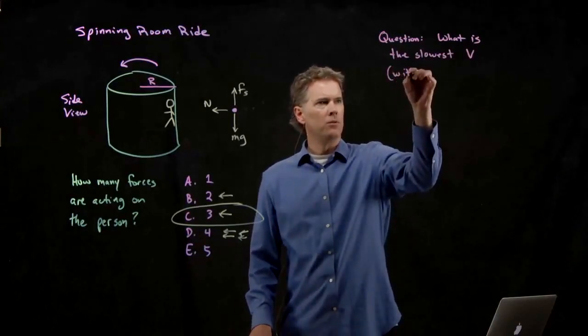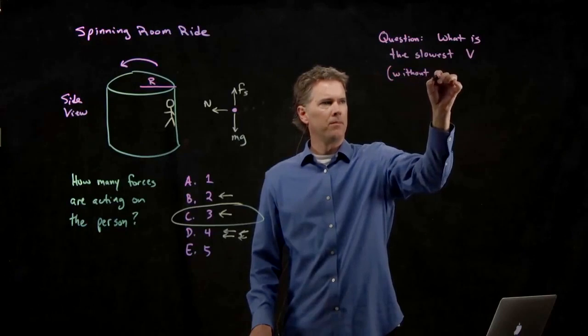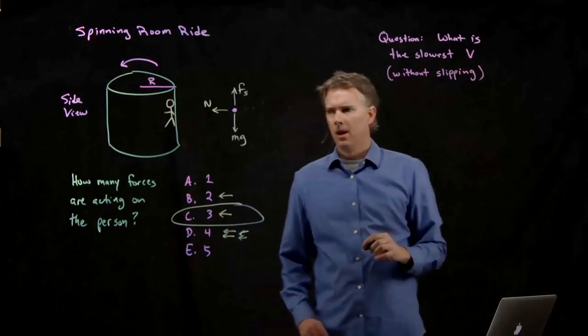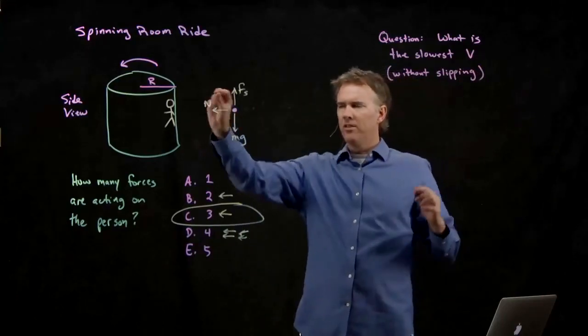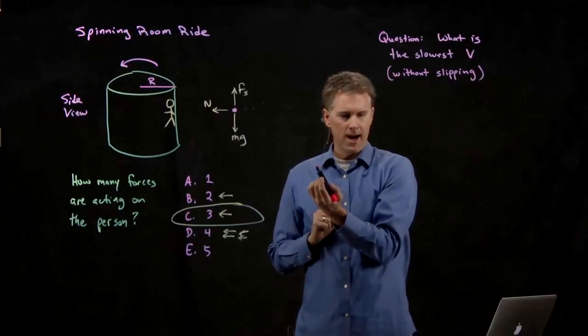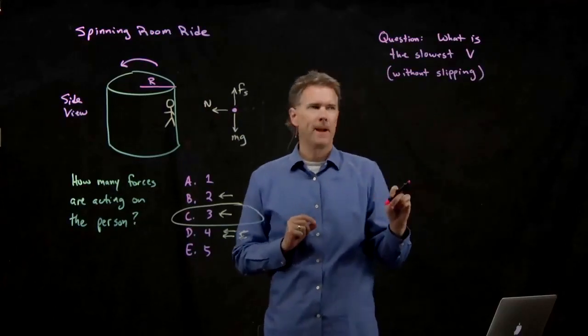what is the slowest V such that you don't slip? In other words, you're stuck to the wall. What's the slowest that you can rotate this ride and still have that person stick to the wall?